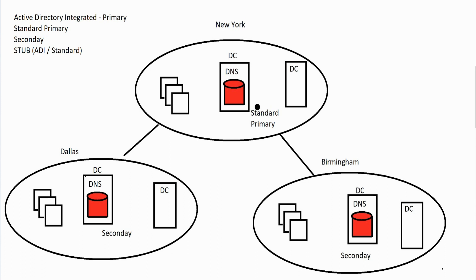One real reason some companies use the standard method is because they host their DNS entirely on Linux or Unix and aren't using Microsoft servers for DNS at all. That's how you'd get away with it if needed. But honestly, in my experience working with Active Directory since before it went live in the beta days in the 90s, I've never seen a company really go that route. It's generally always ADI primary — that's where most companies end up.